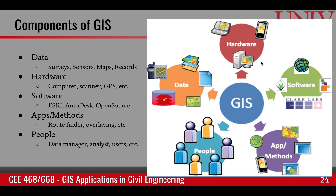The second component of GIS is hardware. This is the infrastructure that provides us the ability to store, manage, and process the data. Hardware includes devices used to acquire the data, for example GPS devices and field data recorders. It also includes computers used to store and process the data, and devices used to produce output such as plotters, 3D printers, and displays.